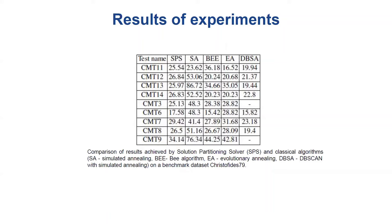However, the solution partitioning solver gives comparable results, and sometimes even better results, on a benchmark dataset, Christofides 79, which is often used for comparing algorithms solving VRP.